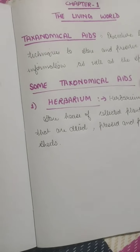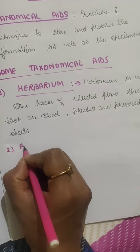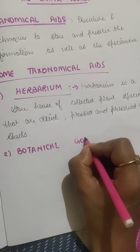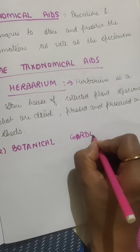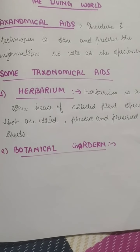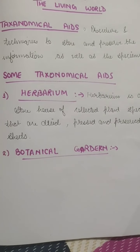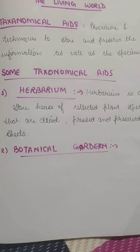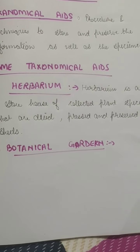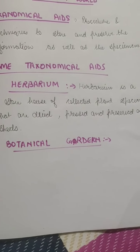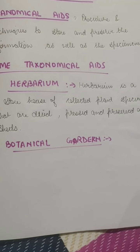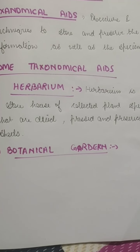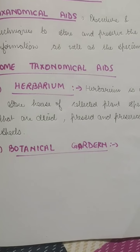The next taxonomical aid is botanical gardens. As the name suggests, botany is the study of plants, and a garden is a place where plants are grown. A botanical garden is a live collection — a collection of living plants, unlike herbarium which has dried and pressed plants. Plant species in these gardens are grown for identification purposes, and each plant is labeled with its botanical name, scientific name, and family.